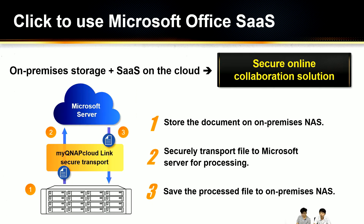Here's how it works. You store your document in the on-premise NAS, which you can call a private cloud. We integrate with Microsoft Office SaaS — software as a service — which is on the cloud. Your data is transported to the Microsoft server through the myQNAPcloud link via a secured connection. Microsoft server handles the processing, and then the data is saved back into your on-premise NAS. So your data is kept in your private cloud — it is a secure online collaboration solution.